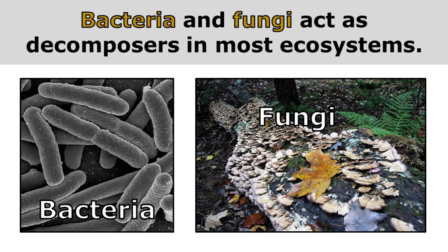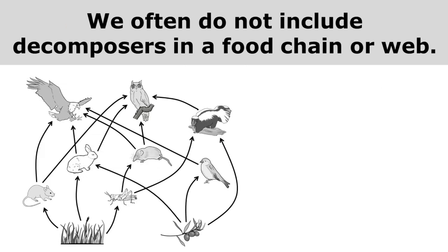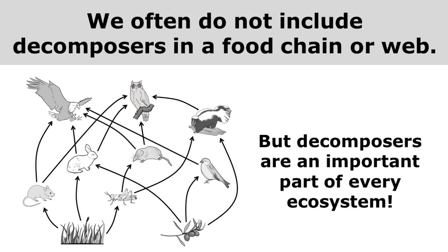Bacteria and fungi act as decomposers in most ecosystems. We often do not include decomposers in a food chain or web. In this food web we have grass, berries, mice, owls, hawks, and skunks, but there aren't any bacteria or fungi present. But even if we don't show them, decomposers are an important part of every ecosystem.